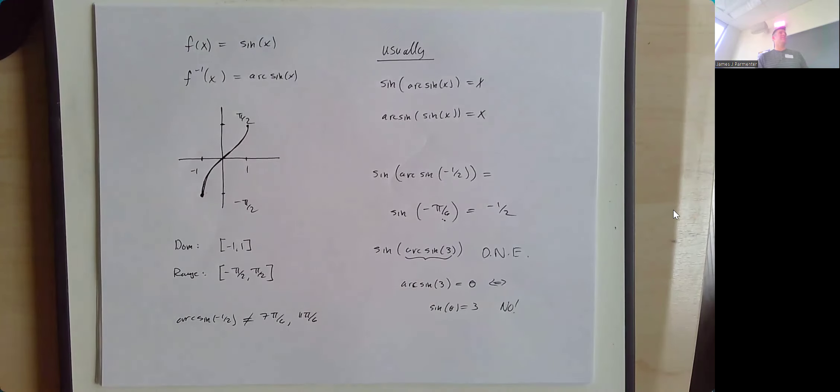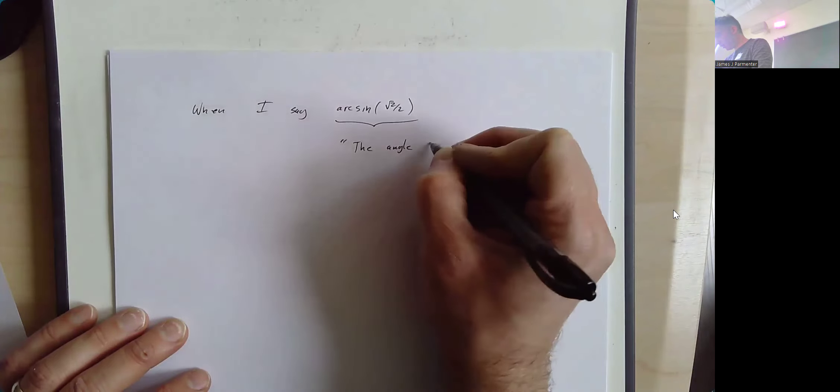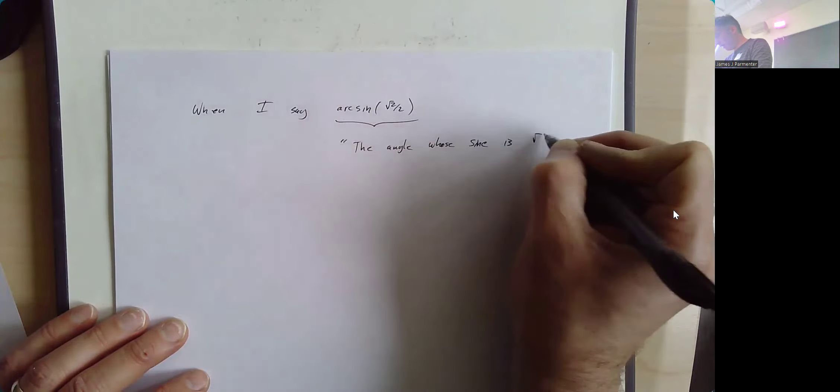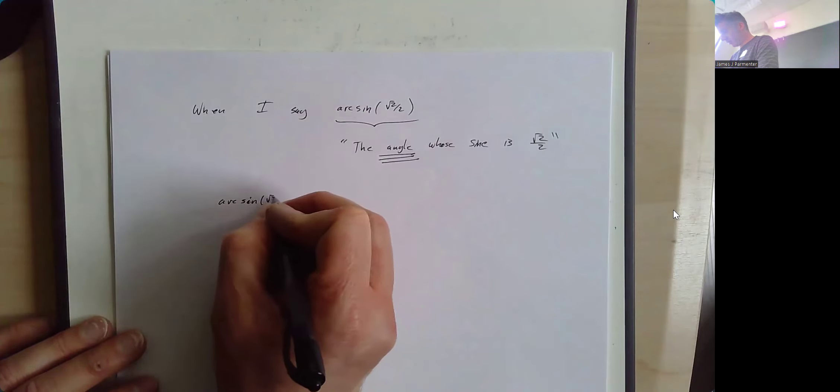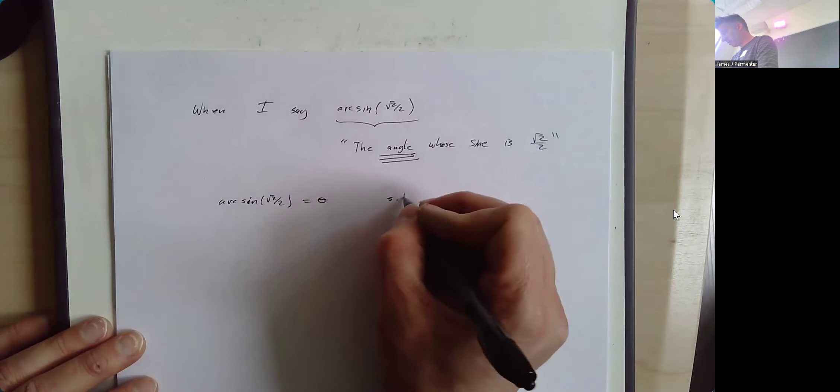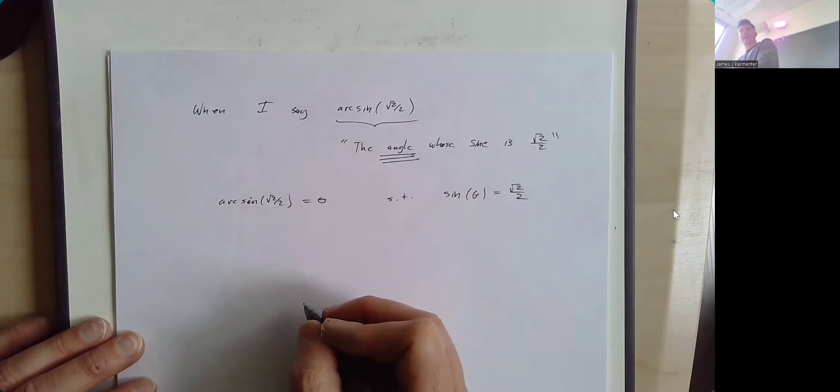The most important thing: when I say arc sine of root 2 over 2, what I say in my head is 'the angle whose sine is that value.' Emphasis on the angle. Arc sine of whatever is an angle. Arc sine of root 2 over 2 is the angle theta such that sine of theta equals root 2 over 2, which is pi over 4 — in radians. Degrees are not an option here. You can use degrees and convert, but make sure your answers are in radians.